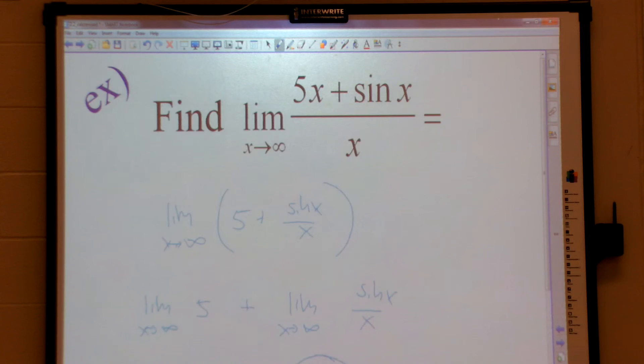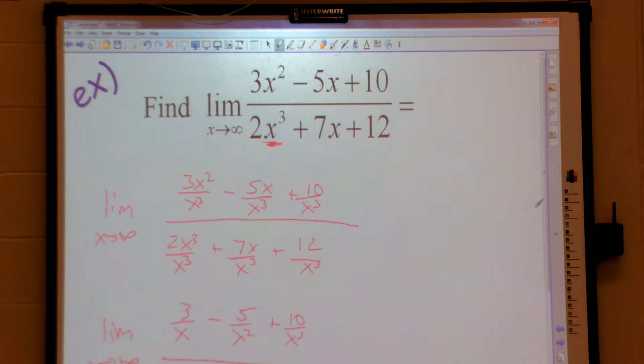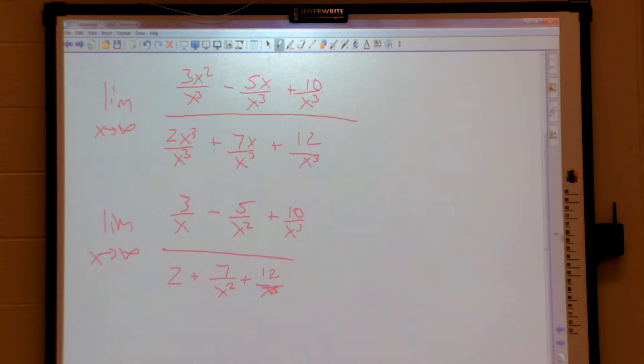Zero. Zero. So here, anything that's left, this is going to go to zero. Right? Because it's 3 over 10, 3 over 100, 3 over 1,000. That's going to go to zero. That's going to go to zero. 2 is just 2. That's going to go to zero. And that's going to go to zero. So I have zero over 2, which is zero.